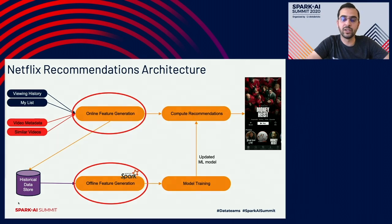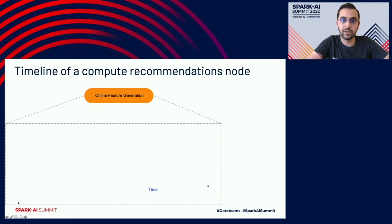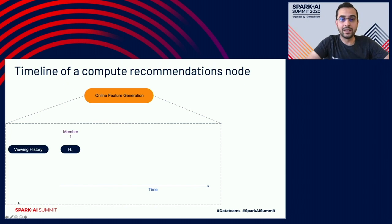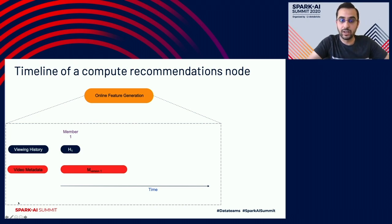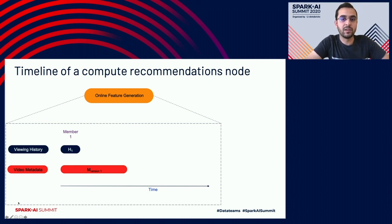Let's dig into the online feature generation job and visualize it on a timeline — assume a 24-hour timeline. We want to compute recommendations for member one. We have the viewing history of that member, and then we get the video metadata — the entire catalog — which is 10 gigabytes. We load this 10 gigabytes into memory, and from the viewing history and video metadata we compute the features for member one. While that 10 gigabytes is sitting in memory, why not also compute recommendations for members two, three, and four?